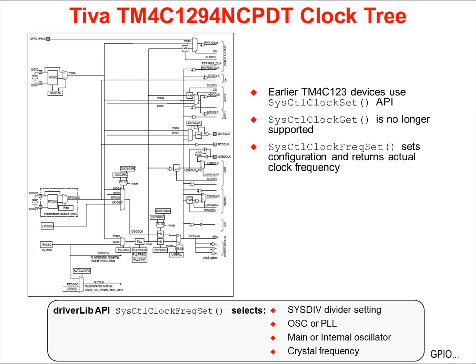You should bear in mind that there are restrictions on the crystal frequency. Working our way to the right, let's also use the PLL, divide it properly, to drive the system clock at 120 MHz or below. Making all those selections is simplified with the use of the TivaWare API shown at the bottom of the slide. A single line of code can make all of the choices shown to program the system clock selections. It returns the actual clock frequency that has been programmed.